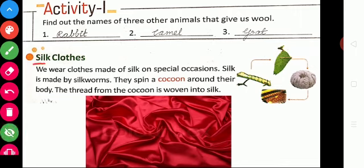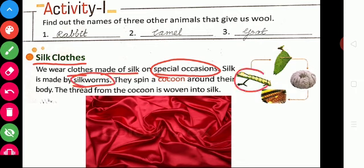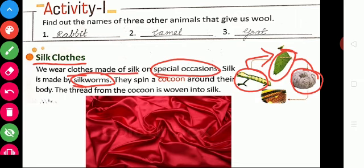The next type of clothes is silk clothes. We wear clothes made of silk on special occasions. Silk is made by silkworms. The silkworm spins a cocoon around its body, and from this cocoon thread is made. This thread is used to make silk clothes.